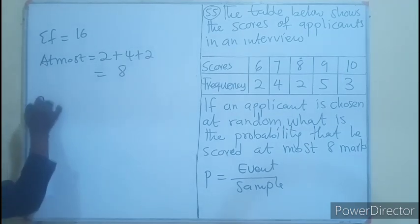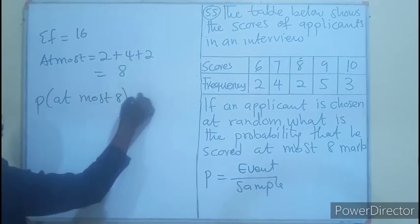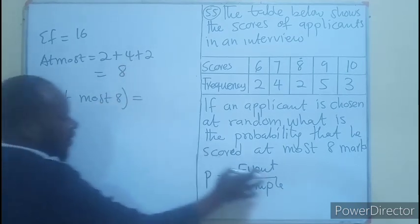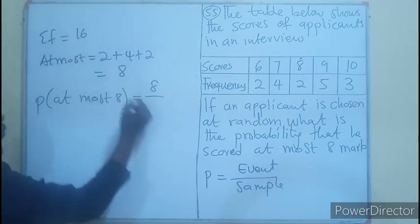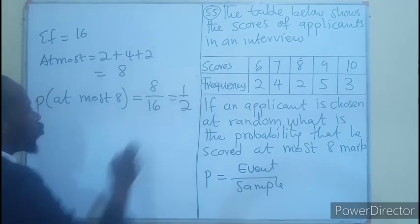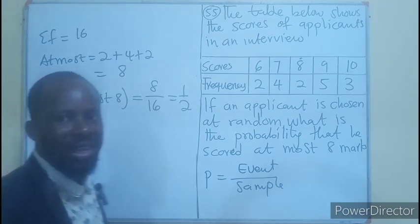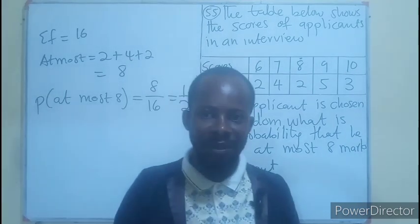So probability of at most 8 would be the probability, which is the sample 8 over total sample, which would be 16. And that is 1 out of 2. So the probability is just half. And on the options, that would be the option E on the question paper.